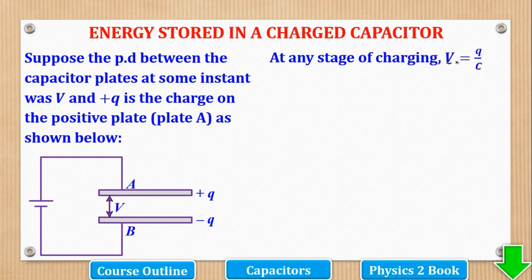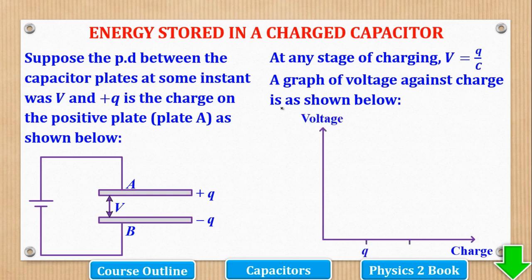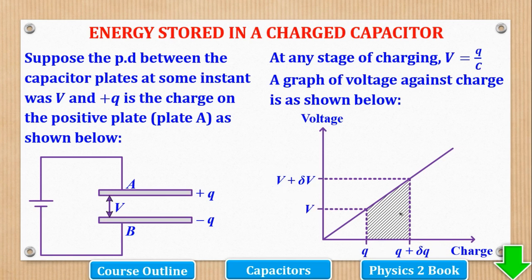At any stage of charging, V is equal to Q over C. This is a rearrangement of the formula we saw in the previous video, because Q equals CV, so making V the subject gives Q over C. A graph of voltage against charge will be linear with a positive gradient, implying that when PD is V, charge is Q. When PD is increased by a small change in V, charge will also increase by a small change in Q. We shade an area on this graph, and we shall see why in the next step.